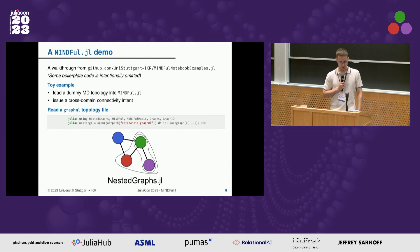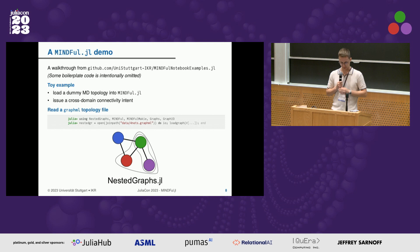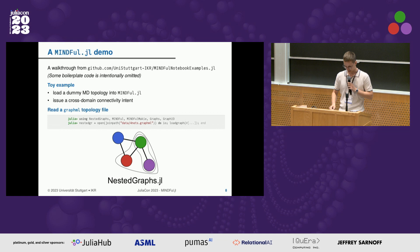Now I will move on to the demo, where we will see a toy example. We will load a dummy multi-domain topology into Mindful.jl and issue a cross-domain connectivity intent. First, we need to read a GraphML topology file. We do this with the following commands — slightly simplified in this case — and the result will be a nested graph type using the NestedGraphs.jl package.